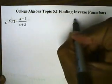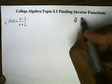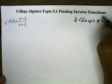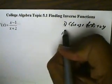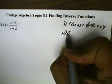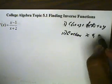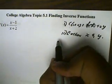Well the four steps are first change f of x to y. Step two, exchange x and y. Step three,